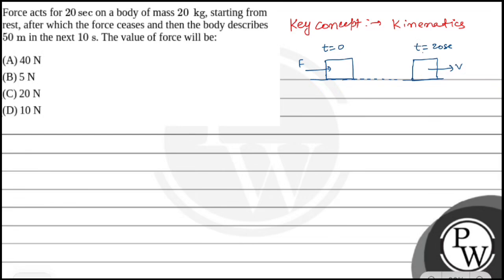That velocity is V. So what will happen after the 20 seconds during which the force is applied? After the force is removed, in the next 10 seconds the body moves 50 meters. Since there is no external force, we can use the first law — the velocity won't change, meaning the body moves at constant velocity.